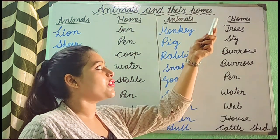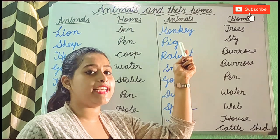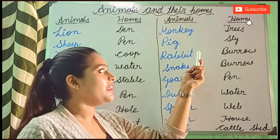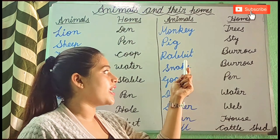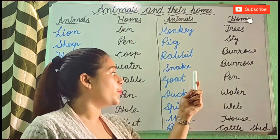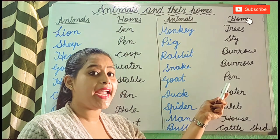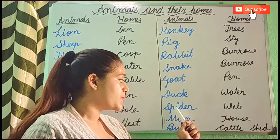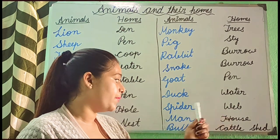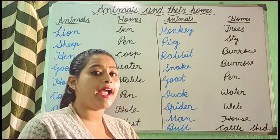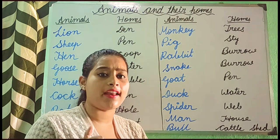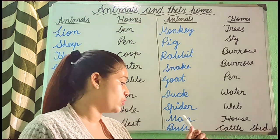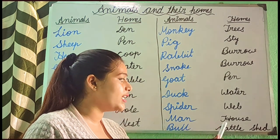Next one, Monkey. Monkey lives in a tree. Pig. Pig lives in a stile. Rabbit. Rabbit lives in a burrow. Snake. Snake also lives in a burrow. Goat. Goat lives in pain. Duck. The home of a duck is water. Spider. The home of a spider is wave. Man — the home of a man, human being like you and I, stay at home. So the home of a man is house. And Bull. The home of a bull is cattle say.